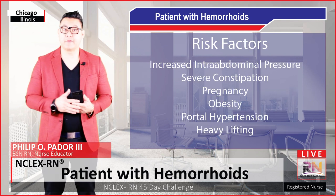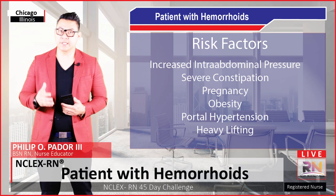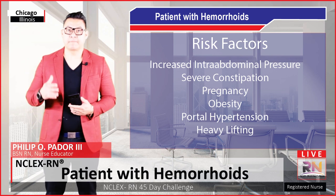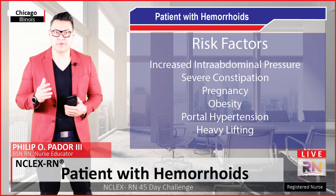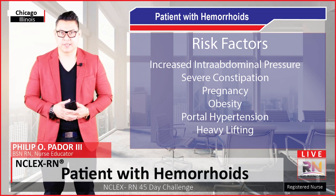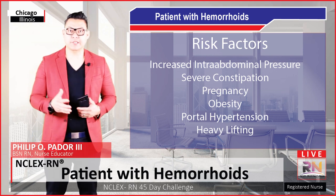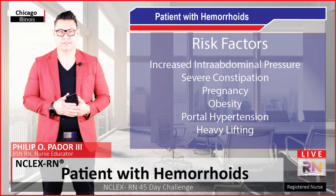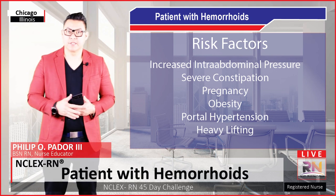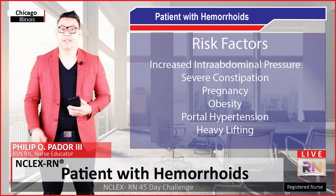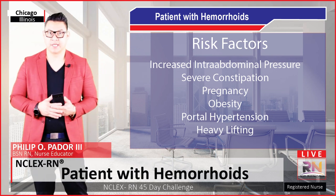The risk factors for developing hemorrhoids include increased intra-abdominal pressure, severe constipation, pregnancy, obesity, portal hypertension, and heavy lifting. All of these essentially cause some form of increase in intra-abdominal pressure. This means more pressure within the abdominal cavity. When there is more pressure, the veins must overcome it as blood drains back through the abdominal cavity, and because of this pressure, these veins — in this case the rectal veins — enlarge.